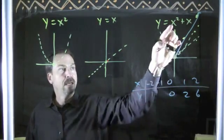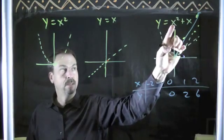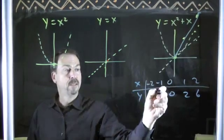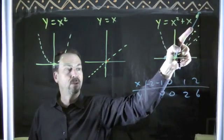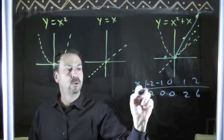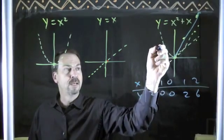Negative 1, negative 2. Negative 1 squared is 1. Plus negative 1 is 0. Oh, it's 0. Negative 2 squared is 4. Plus negative 2 is 2. So it's 0 and now it's 2.